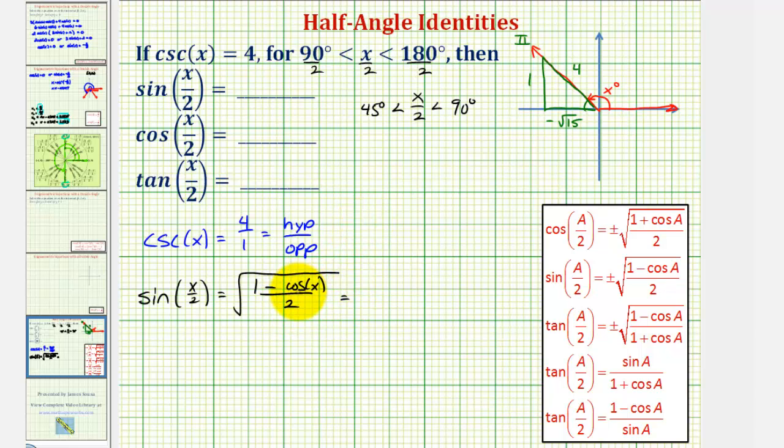And now we can find the value of cosine x using our reference triangle, so we'd have the square root of one minus cosine x is equal to the ratio of the adjacent side to the hypotenuse, which would be negative square root of 15 divided by four.